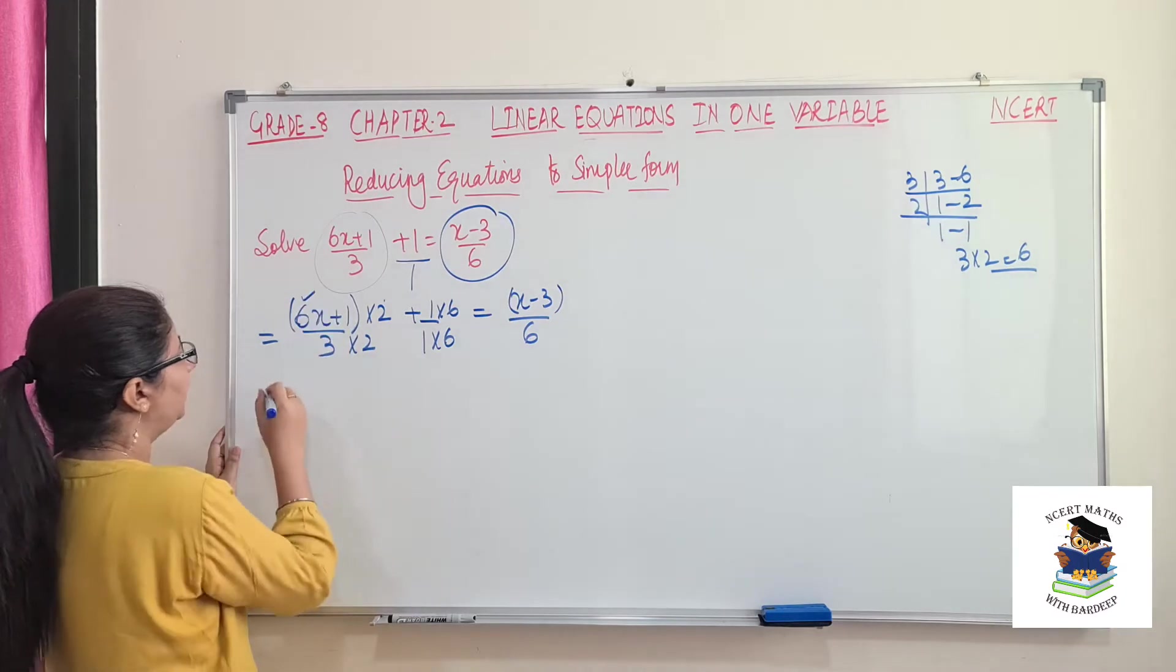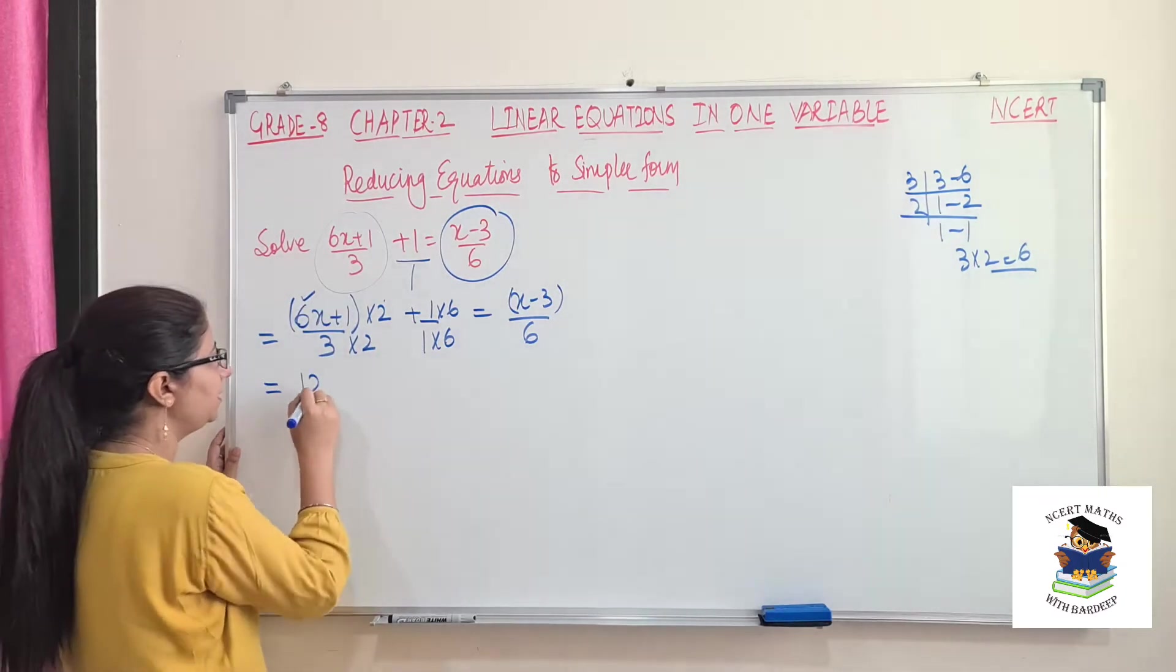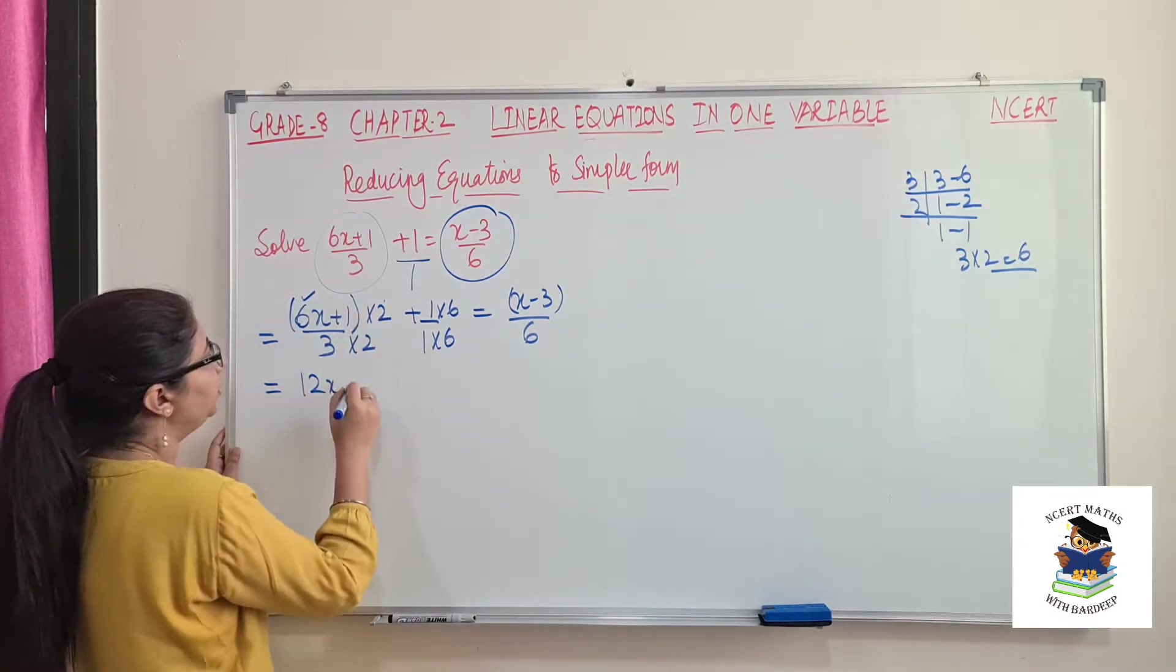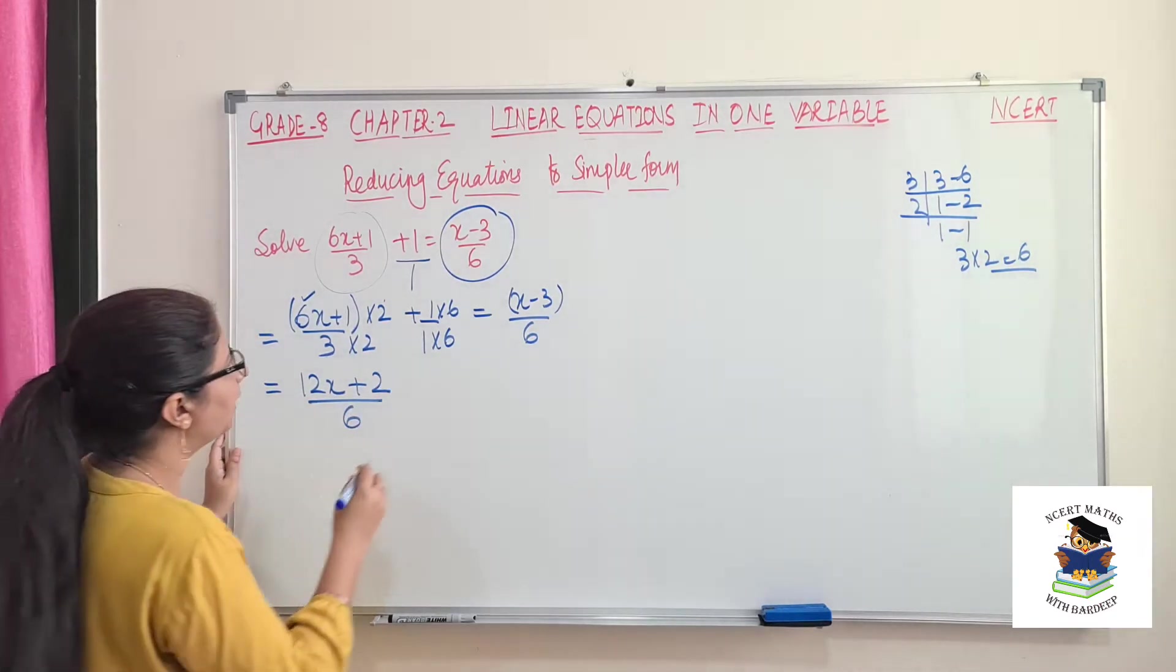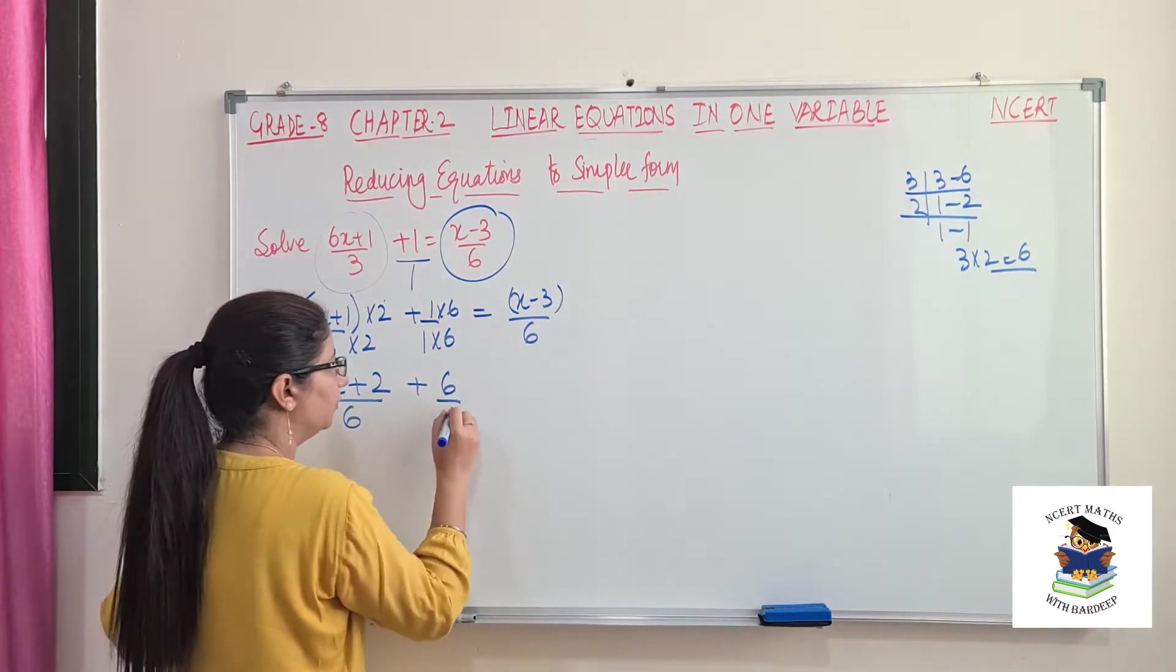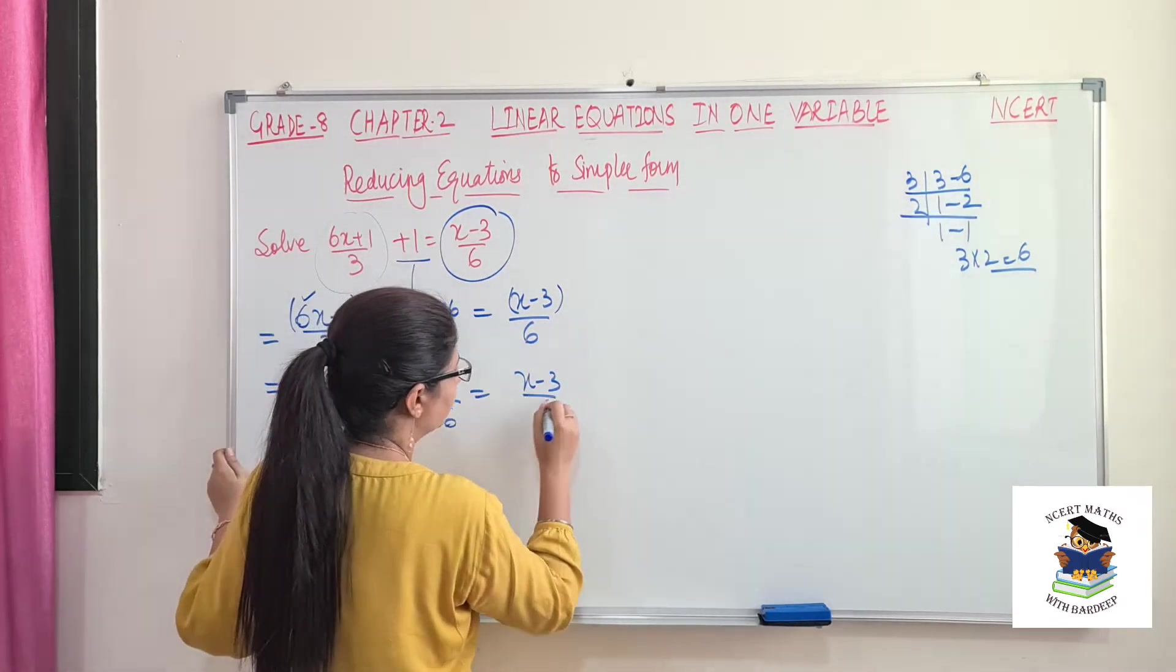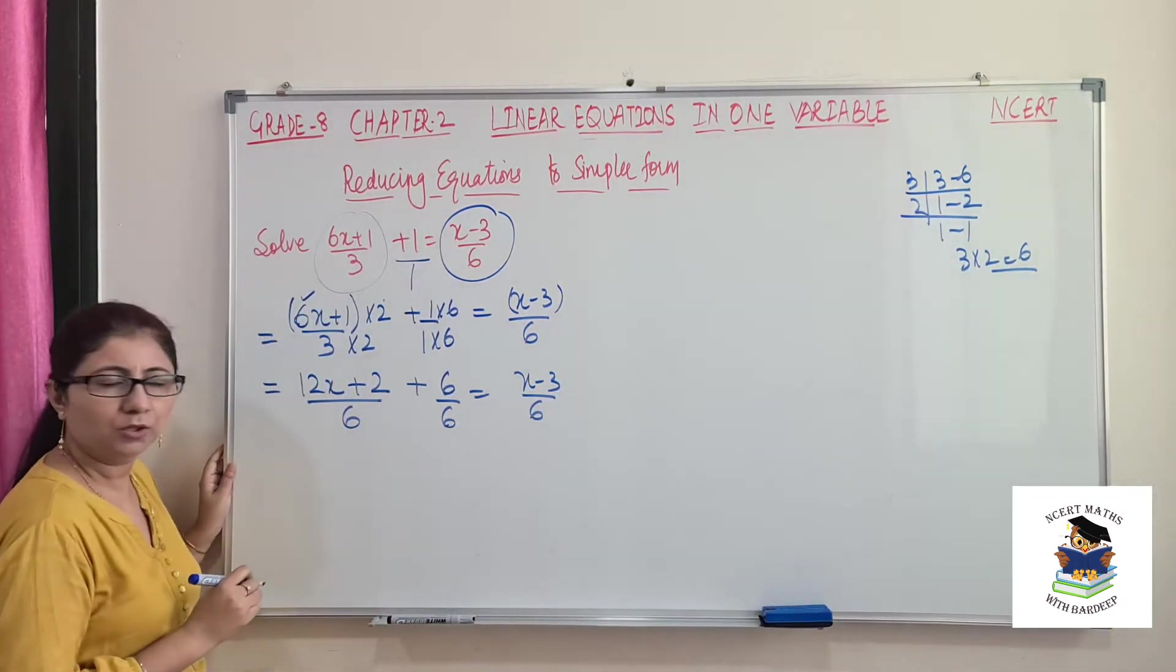This 2 is to be multiplied with 6. So 2 into 6 is 12x. 2 into 1 is 2 over 6. So next is 6 over 6, and here it is (x - 3)/6.